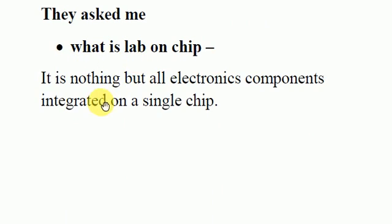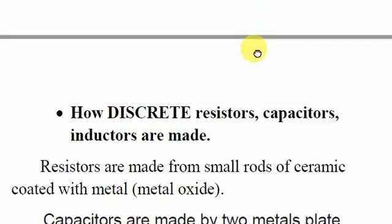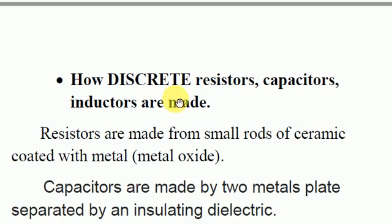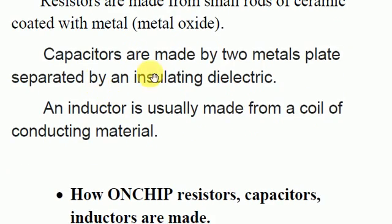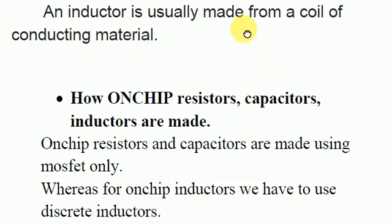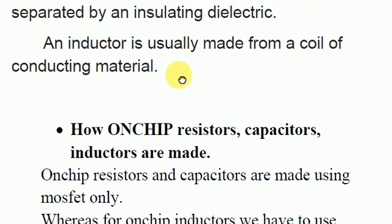The first question was: what is lab-on-chip? I answered that it is all electronic components integrated on a single chip. The second question was how discrete resistors, capacitors, and inductors are made. Resistors are made from small rods of ceramic-coated metal, capacitors from two metal plates separated by an insulating dielectric, and inductors from a coil of conducting material.